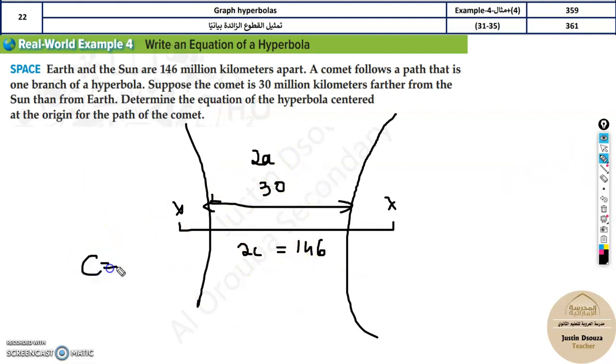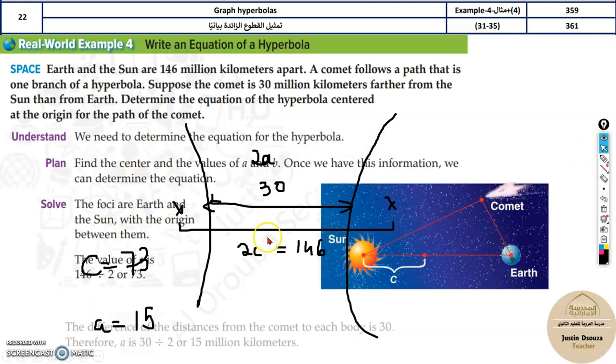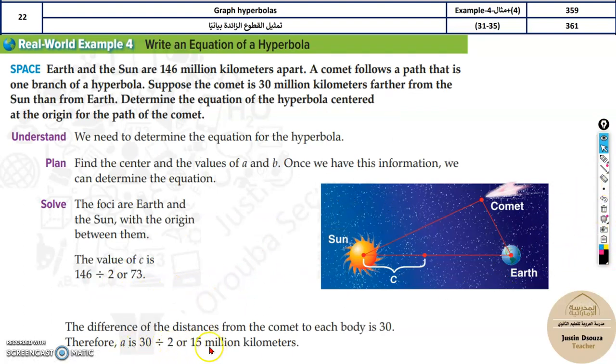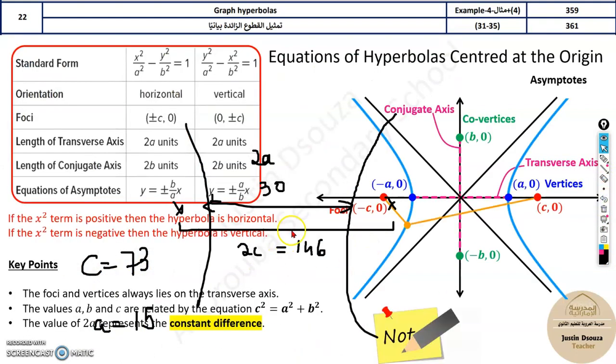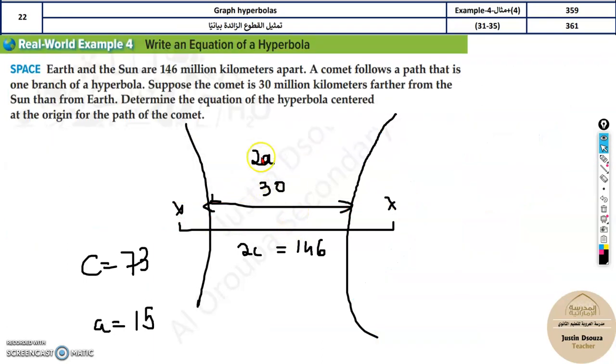So c is equal to 73 and a is equal to 15. Now you can do it in detail. C value is found out and a value is found out. A is 15 million kilometers and c value is 73. That is what we just now from this simple diagram. You can easily solve it up.